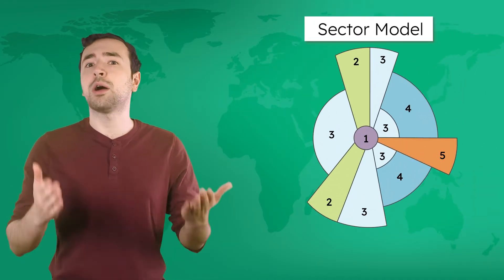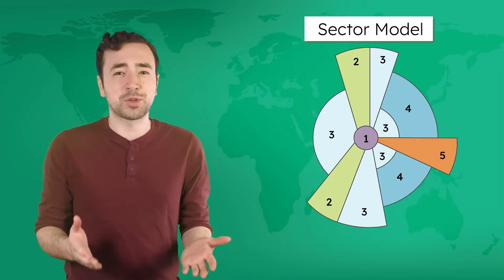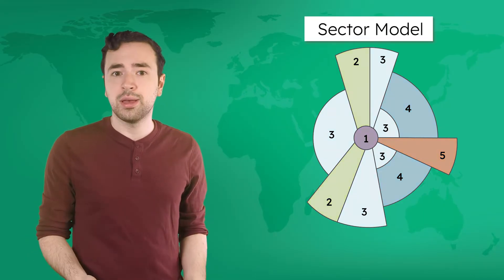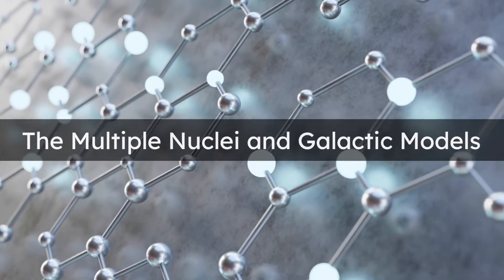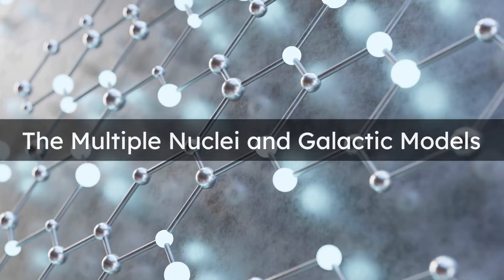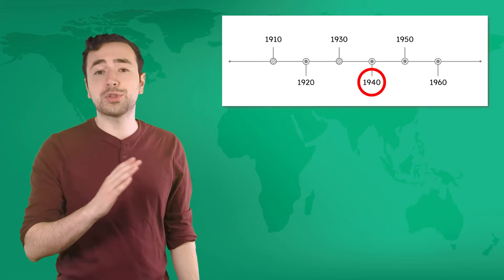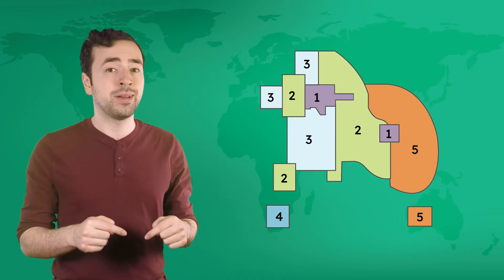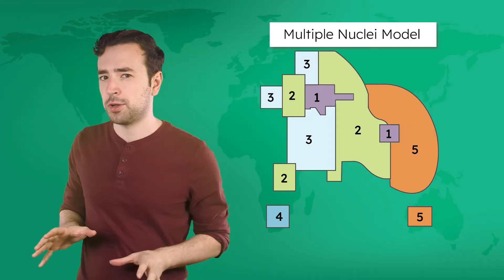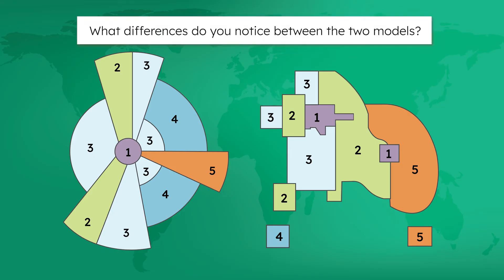The sector model shows us how transportation infrastructure transformed Chicago's land use. But like the concentric model, the sector model became outdated as the city continued to change. By the 1940s, Chicago's structure was changing yet again. The model urban geographers developed for this era is called the Multiple Nuclei Model. Comparing it to the sector model, the Multiple Nuclei Model shows that Chicago developed more than one CBD.